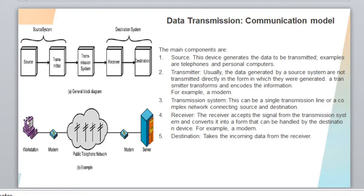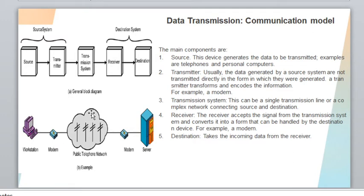As an example, a workstation is a device which generates the raw data, so it acts as the source. In a network we connect those workstations to a modem, so here the modem acts as a transmitter, which processes the raw data using operations like modulation and transmits it to the network. The network itself serves as the medium — either guided media or unguided media.